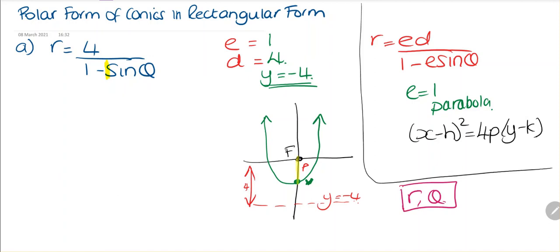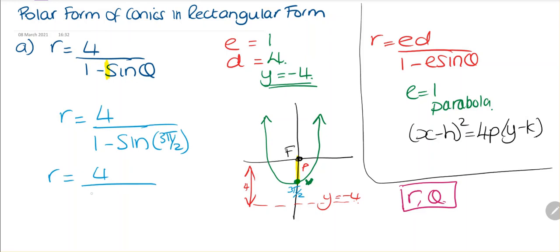We're going to look at r and theta to find this distance. The angle here is at 3π/2. We substitute into our formula: r equals 4 divided by (1 minus sine of 3π/2). That's 4 divided by (1 minus minus 1), which is 4 divided by 2, which is 2. So we know that p is going to be 2.